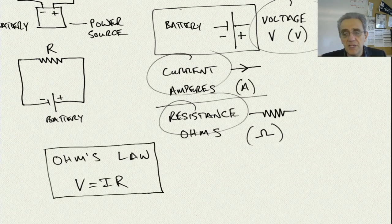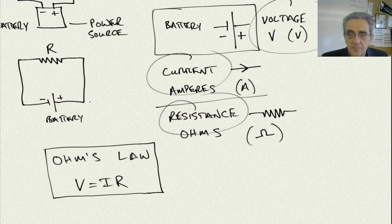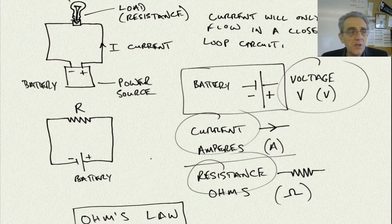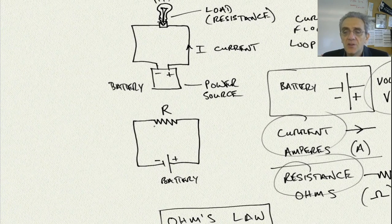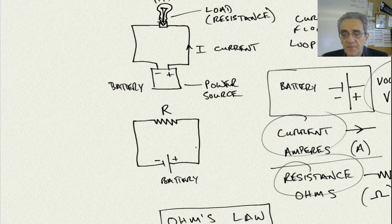Now we can use that equation in our circuit diagram. Before we use Ohm's Law, I want to define something. According to this diagram, the battery's positive side is the long side of the battery. I know therefore that the current is going to be going in this direction. That current, I, is called conventional current.